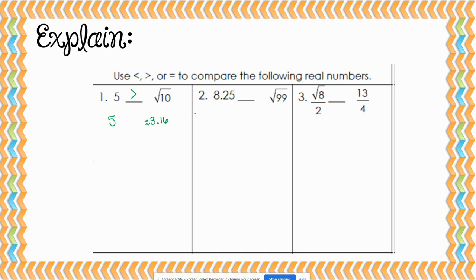For number 2, we're looking at 8.25, which is already in decimal form, and comparing it to the square root of 99. So we need to find the approximate value of the square root of 99, which is approximately 9.95. We know that 9.95 is greater than 8.25. So 8.25 is less than the square root of 99.